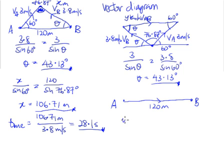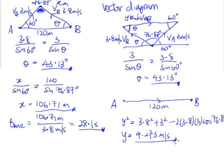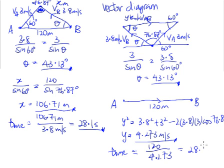To find y, we apply the cosine rule: y squared equals 3.8 squared plus 3 squared minus 2 multiplied by 3.8 multiplied by 3 times cosine 76.87 degrees. From the calculator, y equals 4.273 meters per second. Therefore, the time required for the intersection to occur is the relative distance of 120 divided by the relative speed of 4.273, which also gives us 28.1 seconds.